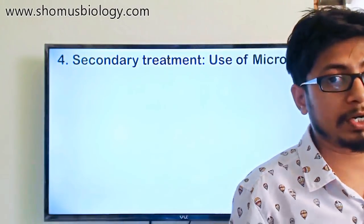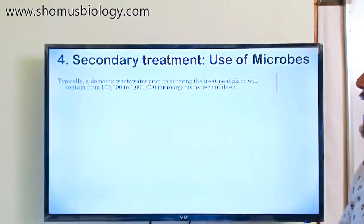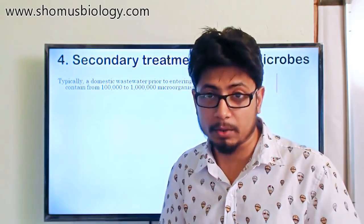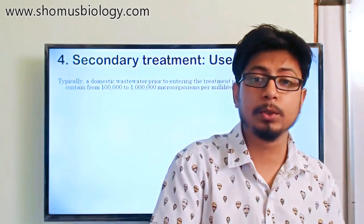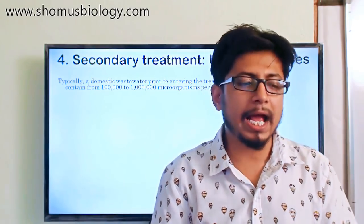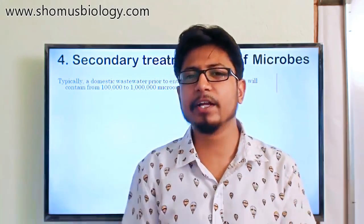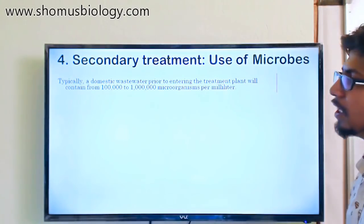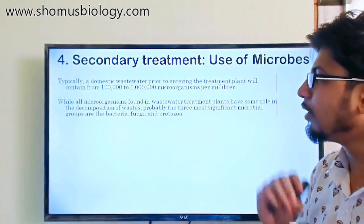Regarding the microorganisms used in secondary wastewater treatment: a typical domestic wastewater entering the treatment plant contains one lakh to ten lakh microorganisms per milliliter. Those microorganisms can do their job, but we still need to add additional microorganisms from outside. We take a sample, analyze what kind of organic matter and solids are present, and then introduce an appropriate array of microorganisms accordingly.